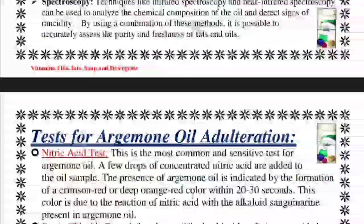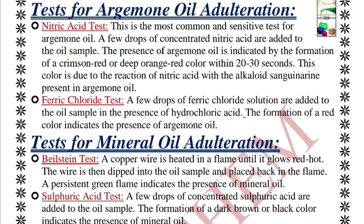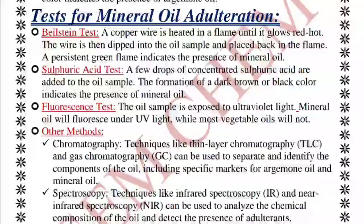For argimon oil adulteration testing, two tests are available. In the nitric acid test, a few drops of nitric acid are added to the sample, producing a crimson red or deep orange color within 20–30 seconds due to the reaction between nitric acid and sanguinarine present in argimon oil. In the ferric chloride test, a few drops of ferric chloride solution are added to the oil sample; a red color indicates the presence of argimon oil.